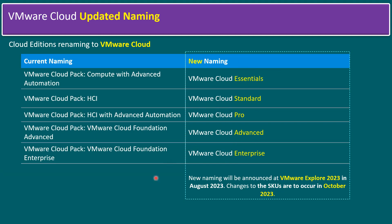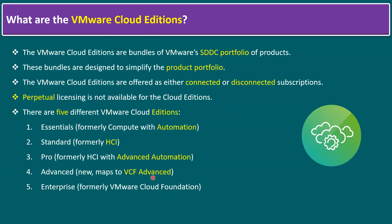VMware Cloud Editions are bundles of VMware's SDDC portfolio of products. SDDC means Software Defined Data Center, which commonly includes vSphere, NSX, and vSAN. Additionally, the bundles also come with the Aria Suite. These bundles are designed to simplify the product portfolio.